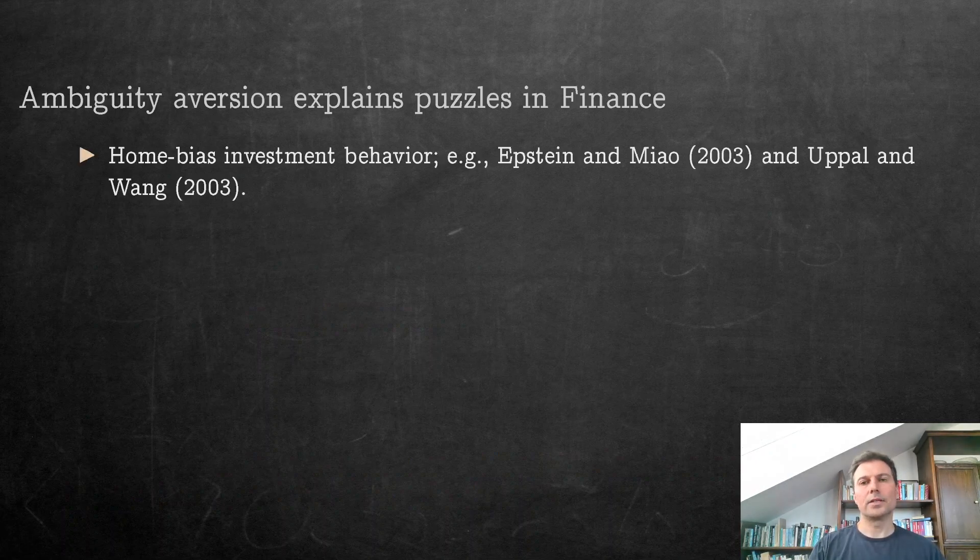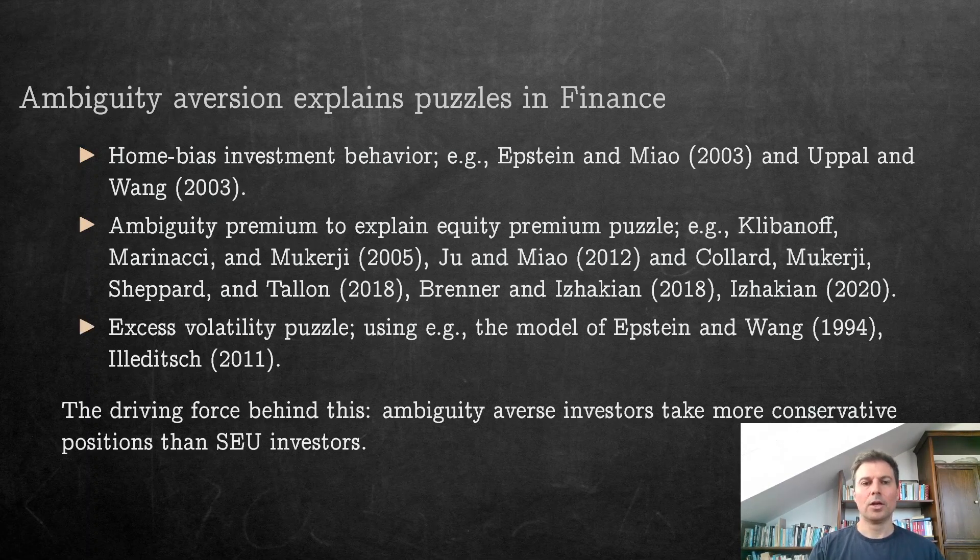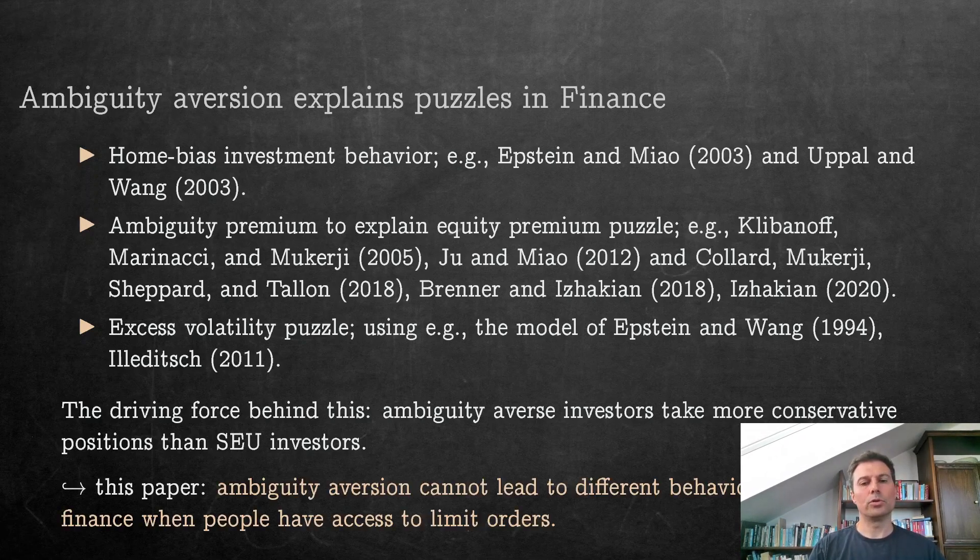What are these things that you can explain with ambiguity aversion? Home bias, investment behavior, equity premium puzzle, excess volatility puzzle—all of these things have been explained fruitfully with ambiguity aversion. The driving force behind this is that ambiguity aversion tends to make investors more cautious, more conservative positions. But yet again, we are going to say that actually ambiguity aversion cannot lead to different behavior than subjective expected utility in finance when people have access to limit orders.